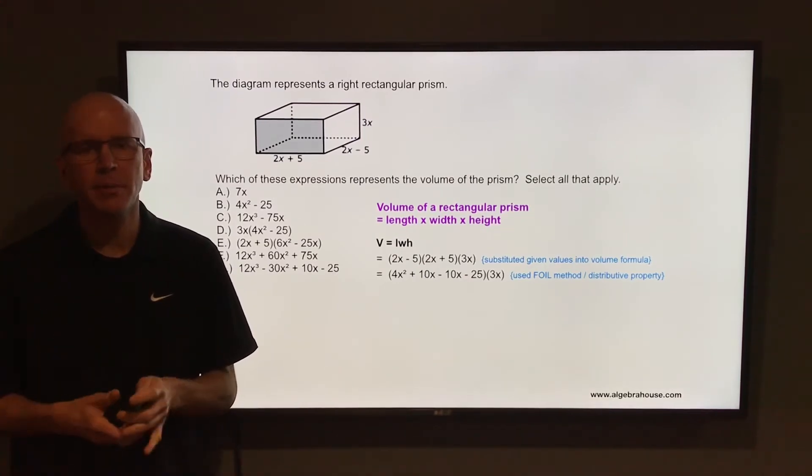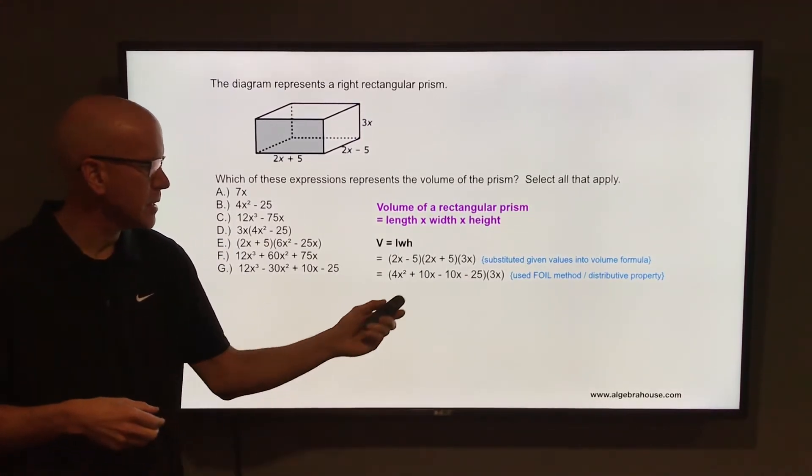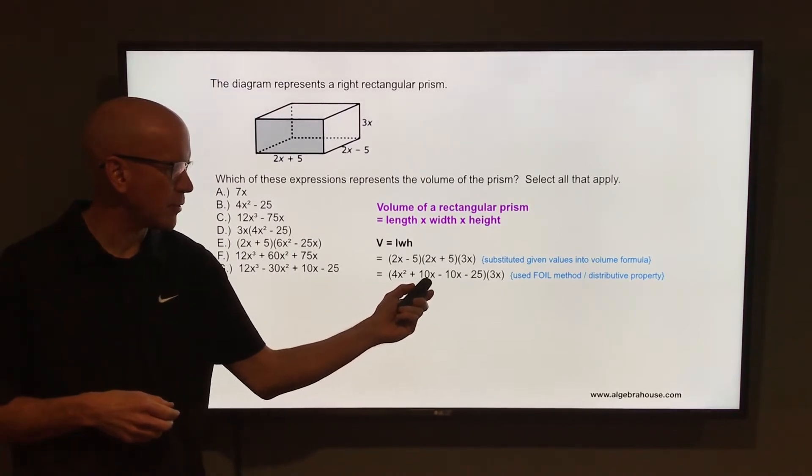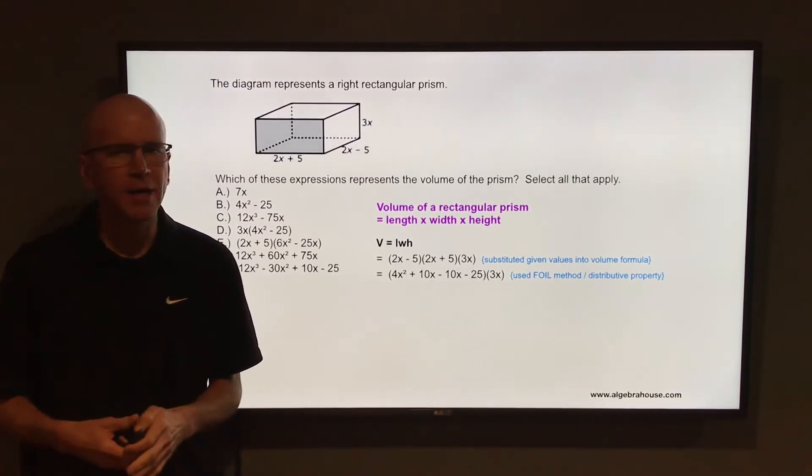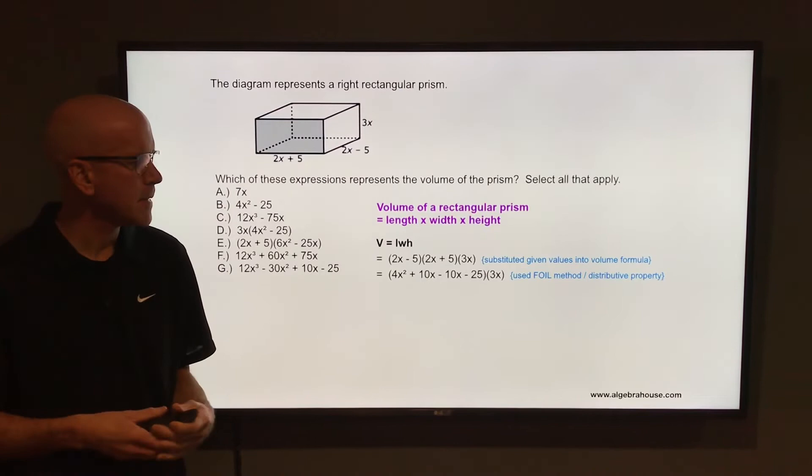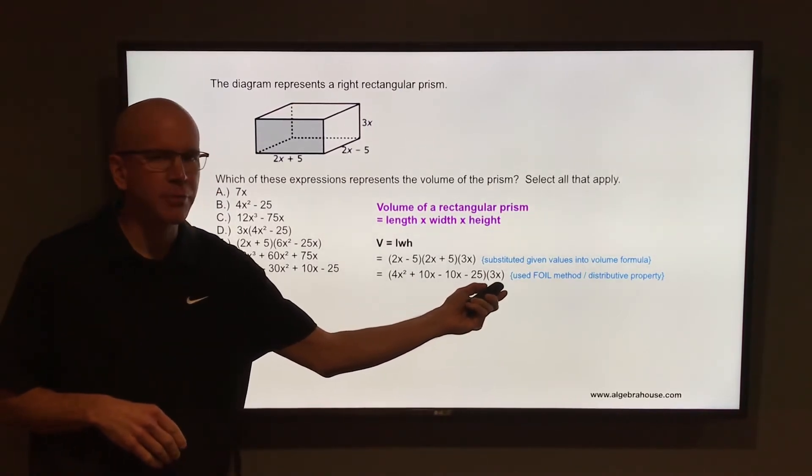Remember the FOIL method and distributive property are the same things when you're multiplying two binomials. So here we have the first terms, the outer terms, the inner terms, and the last terms, if you're thinking about the FOIL method. Don't forget, that's still multiplied by 3x on the end.